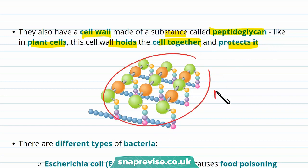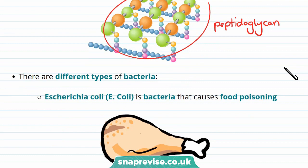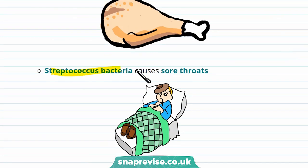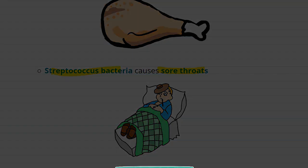There are many different types of bacteria. Some can be useful, such as the ones found in your gut that help you digest food, whereas others can be harmful. For example, Escherichia coli (E. coli) is bacteria that causes food poisoning, whereas Streptococcus bacteria causes sore throats. However, you can treat these bacterial infections using antibiotics.